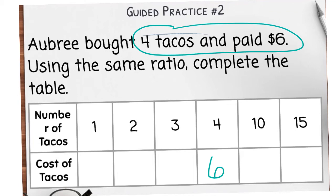The next thing I would do is find the ones that I already know that I can easily get to. If I know four, then I can get to two because two is half of four. So that's dividing by two. So what I do to one, I have to do to the other. So six divided by two would be three. So for two tacos, it's $3.